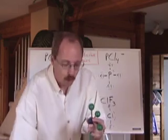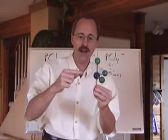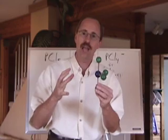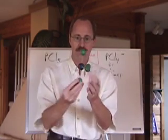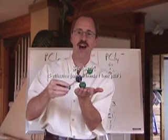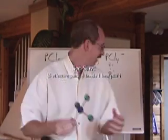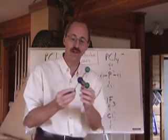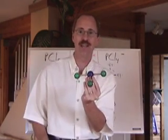So, we pluck off this chlorine. We understand that the lone pair is out here. What's the name of the shape? Believe it or not, this is called seesaw. It's a seesaw shape when you have 5 effective pairs but only 4 bonds. Seesaw shape.